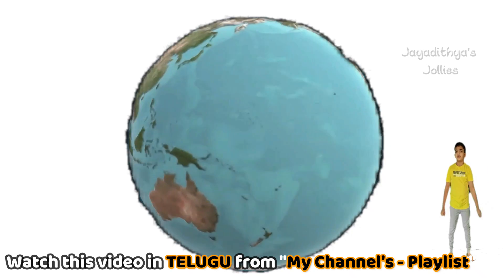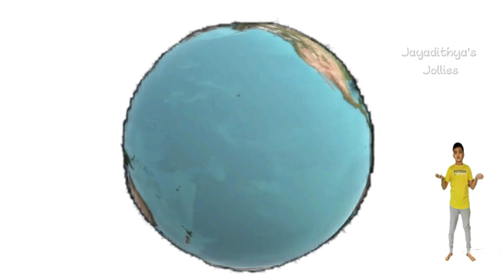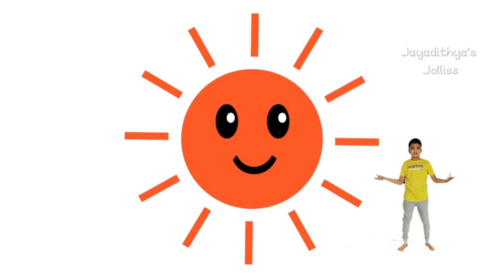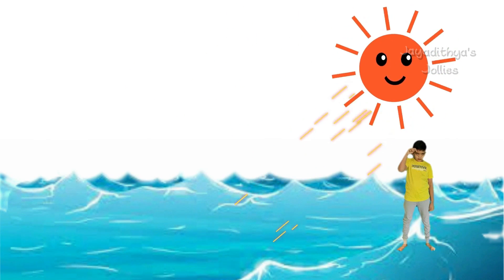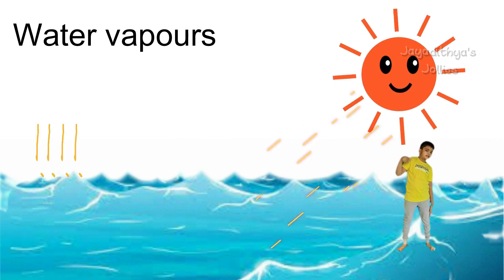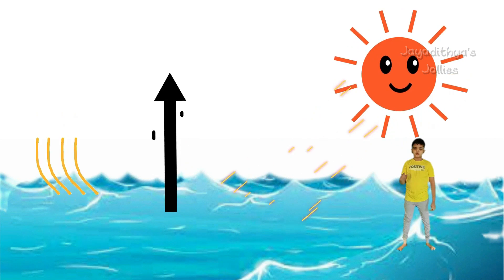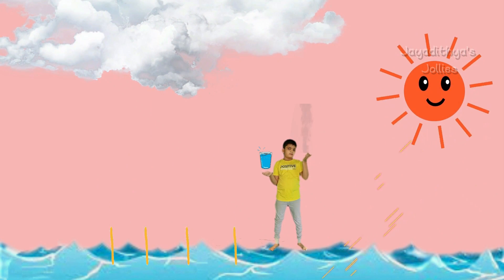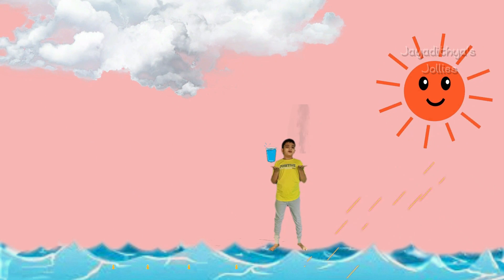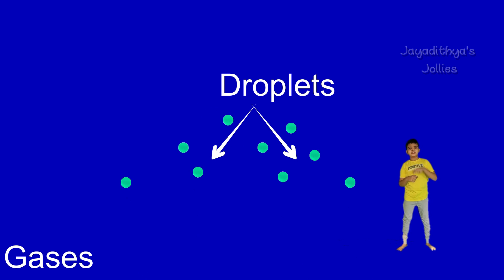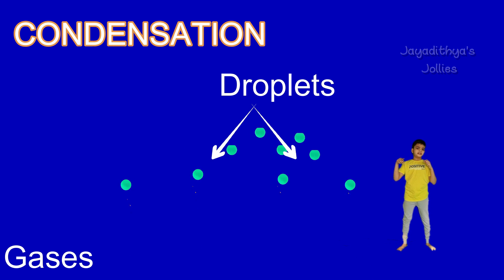Our Earth has water in the form of different water bodies, like oceans, ponds, lakes, rivers. Daily, when the sun rises, the heat of the sun falls on these water bodies and warms up the water to form water vapors. This process of changing water into gases is called evaporation. As gases are lighter in weight than water, these gases go up into the sky. As it is cool up in the sky, these gases form droplets. This process of gases forming droplets is called condensation.